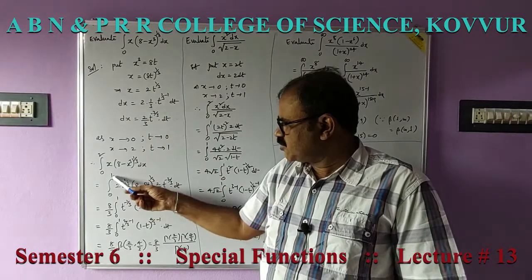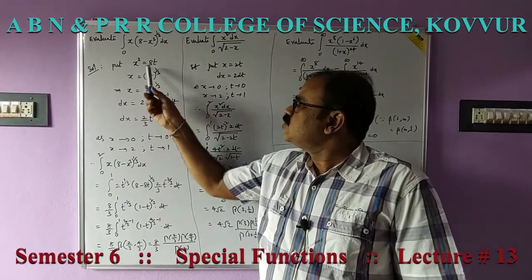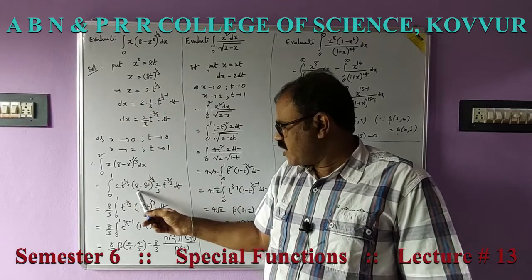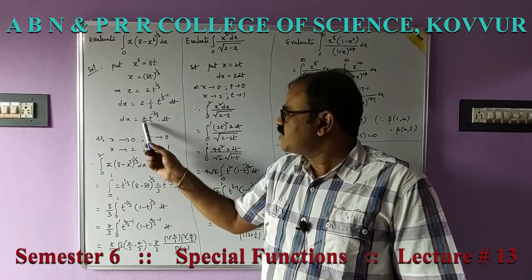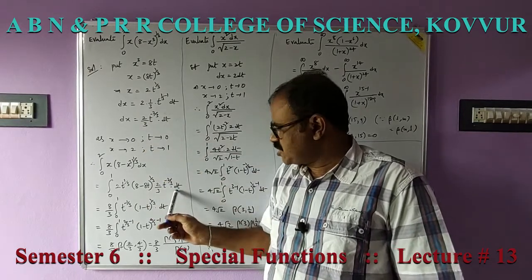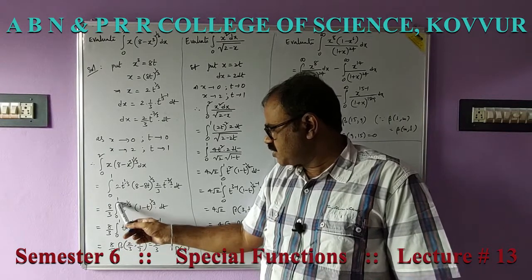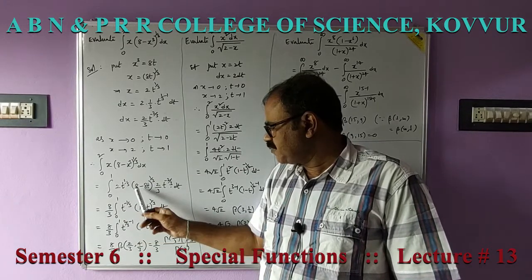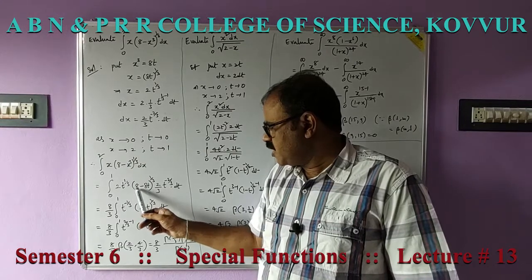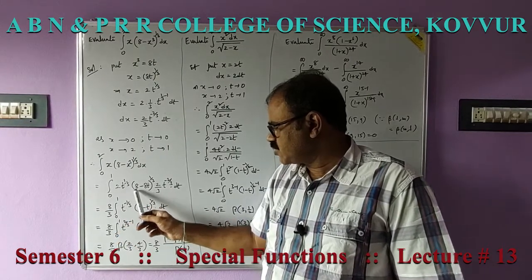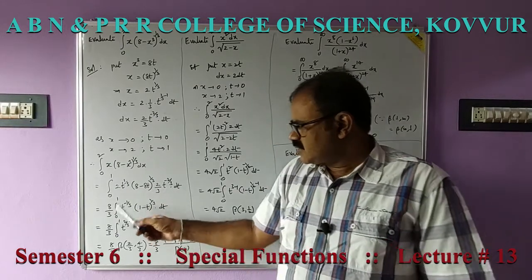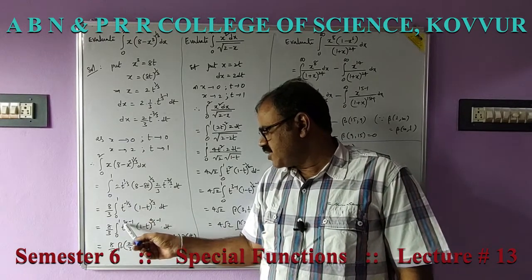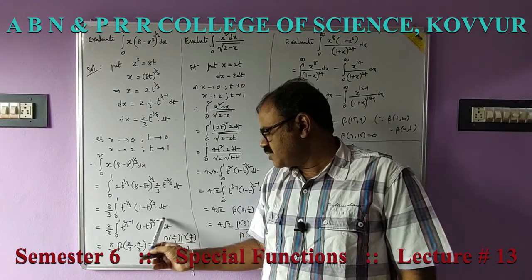The integral is equal to integral 0 to 1: in place of x, you have 2t^(1/3), and in place of dx, you have (2/3) t^(−2/3) dt. Simplifying, you get (8/3) integral 0 to 1 of t^(−1/3). This comes from 1/3 minus 2/3 = −1/3, and the factor 8^(1/3) = 2 is taken outside the integral. Therefore you have (1 minus t)^(1/3) dt. This can be rearranged as (8/3) integral 0 to 1 of t^(2/3 − 1) times (1−t)^(4/3 − 1) dt.